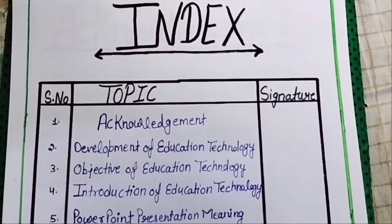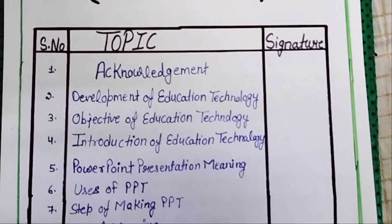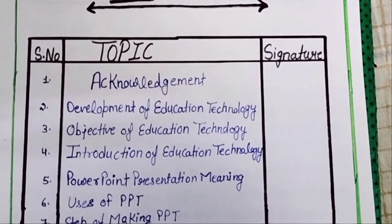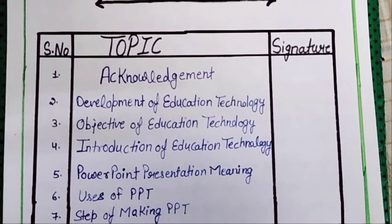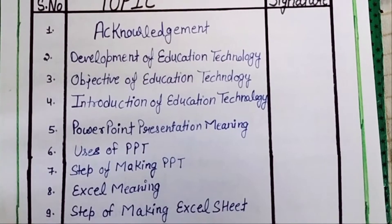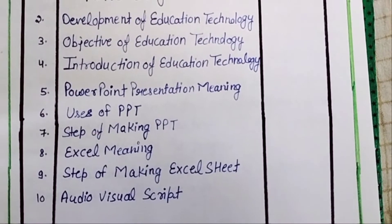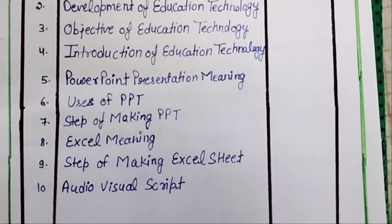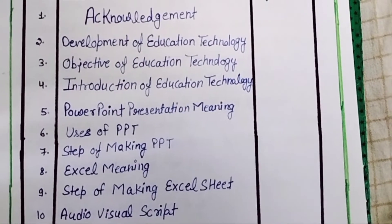So guys, this is our index. We are going to look at the index and cover the topics in the portfolio. First, we are going to start with the acknowledgement. Then, as I have told you, this is an education technology portfolio, so we will write it first as the development of education technology. Then we will write objectives, give introduction, write PowerPoint presentation meaning, what are the uses and steps, Excel meaning and the steps of making an Excel sheet, and our audio-visual script. So these are all the topics.